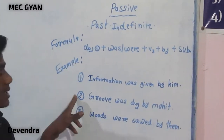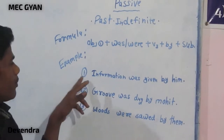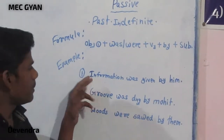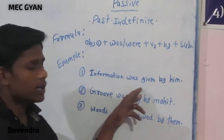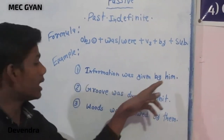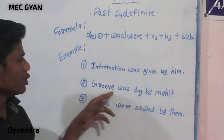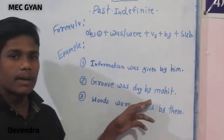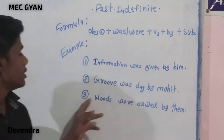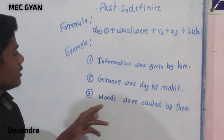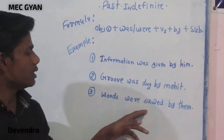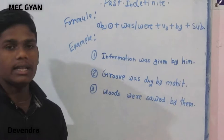Some examples are here. First example: information was given by him. Second: a group was dug by Mohit. Third: words were saved by them.